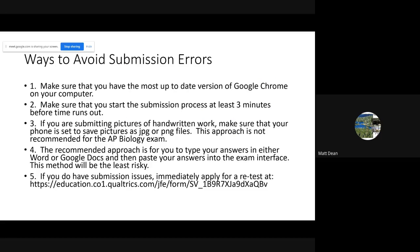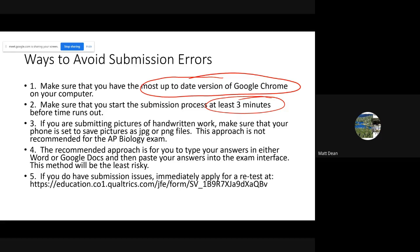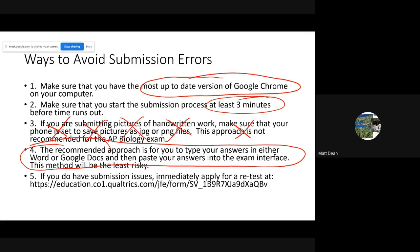To avoid submission errors: number one, update Google Chrome to the newest version. Number two, give yourself plenty of time — save at least three minutes to submit at the end. Number three, do not submit pictures on the AP Bio exam. My recommended approach: type your answers in Word or Google Docs, paste those answers into the exam interface box. If you do run into submission problems and need to retest, the link shown will take you to the retest form. Hopefully you won't need it, but just in case.